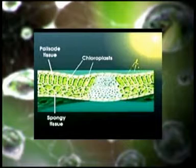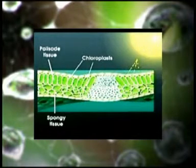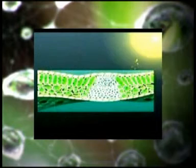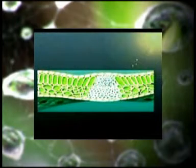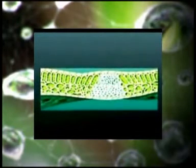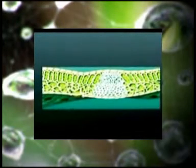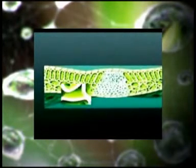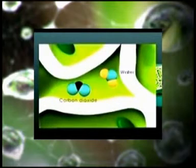Dalam proses fotosintesis, tumbuhan mengambil H2O melalui akar dan mengambil CO2 dari udara melalui stomata atau mulut daun. Di dalam setiap sel jaringan palisade dan jaringan spongi, ada ruang yang terisi dengan CO2, H2O, dan gas-gas lain.